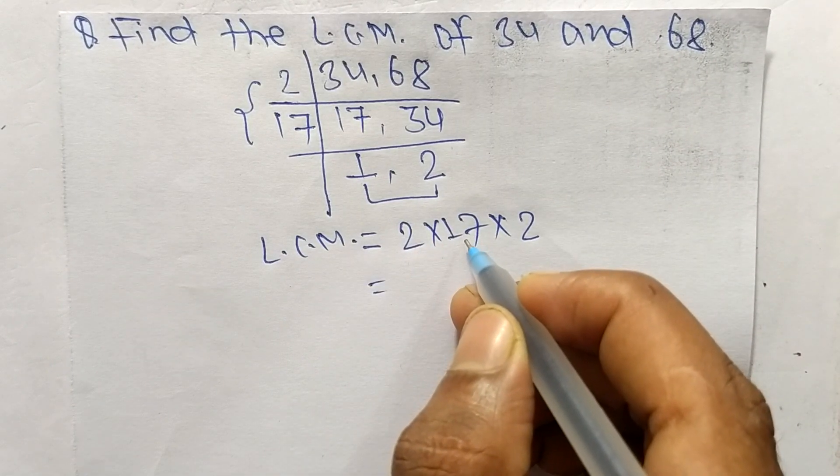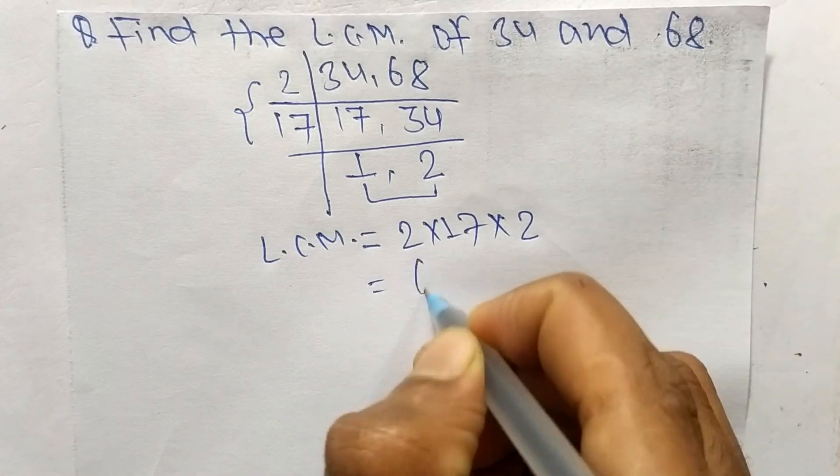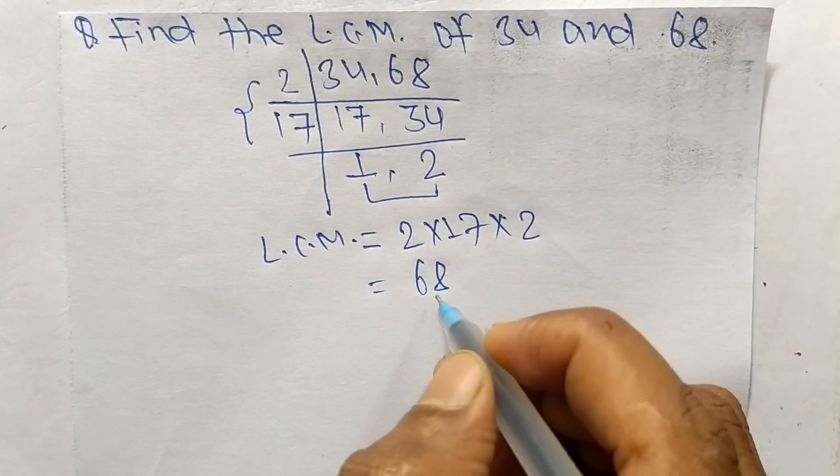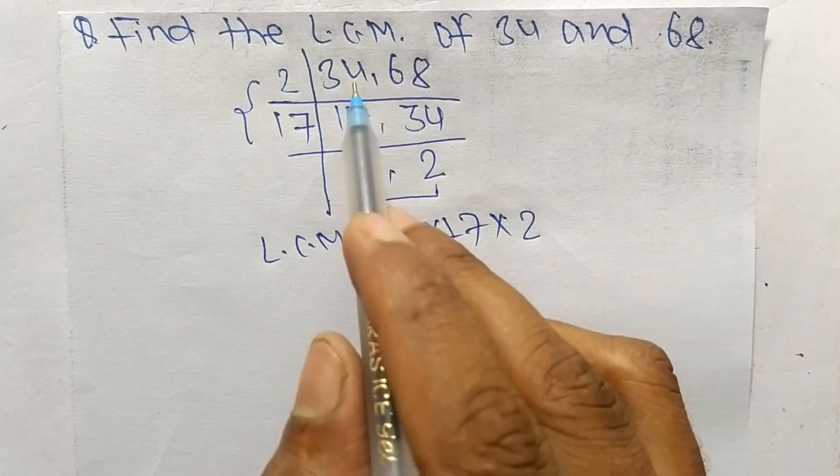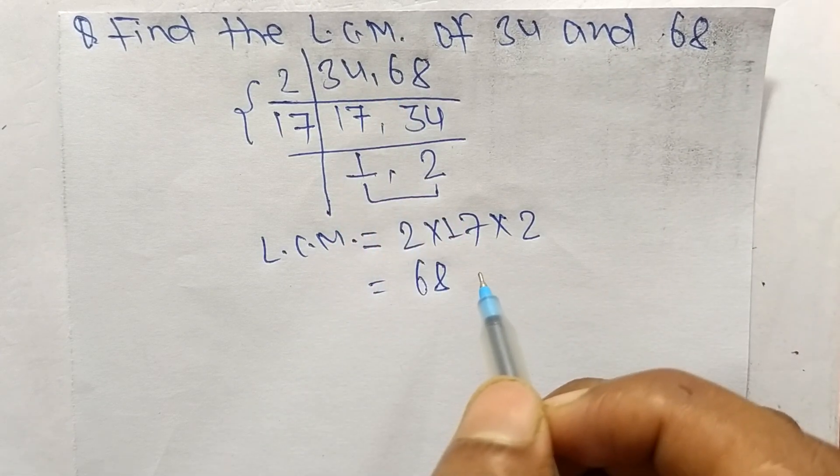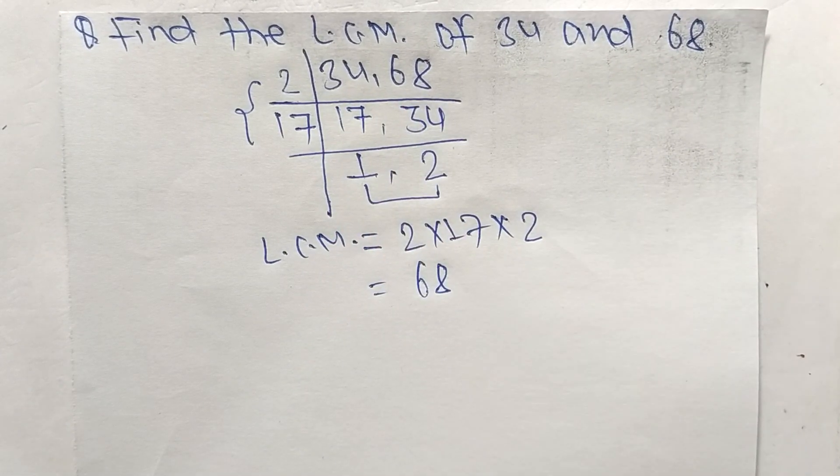So 2 times 17 means 34, 34 times 2 means 68. Therefore, 68 is the LCM of 34 and 68. This is all for today, thanks for watching.